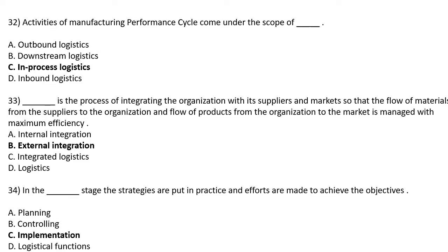Activities of Manufacturing Performance Cycle come under the scope of — Option A: Outbound Logistic, Option B: Downstream Logistic, Option C: In Process Logistic, Option D: Inbound Logistic. The correct answer is Option C: In Process Logistic.